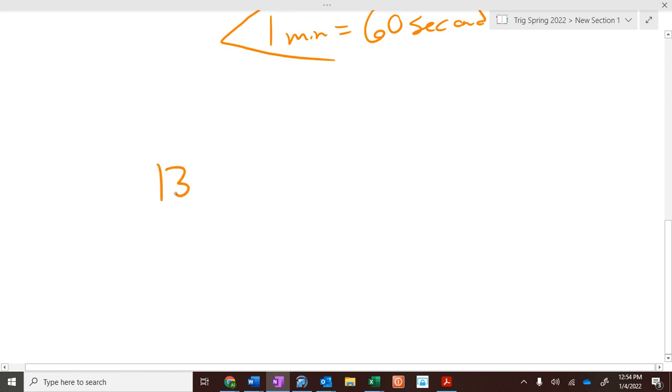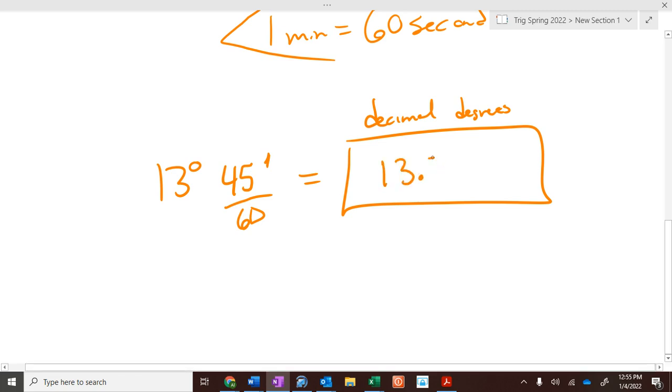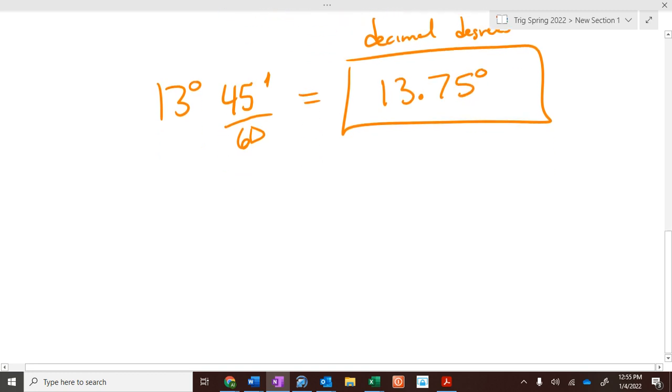So, if we have 13 degrees, 45 minutes, and we're told to turn that into decimal degrees. Now, how many minutes are in an hour? 60. So, 60 minutes in a degree. So, how much of a degree is 45 minutes? Three-fourths. To get that, it's easy. If you don't know what it is right off the top of your head, you just take 45 divided by 60 and get 0.75. So, this is 13.75 degrees.